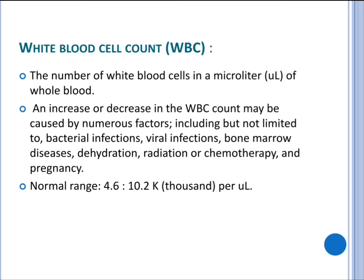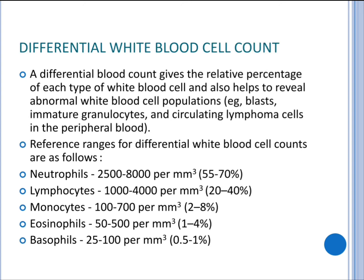A white blood cell differential, which enumerates the different types of white blood cells, may also be performed. The white blood cell count is the number of white blood cells in a microliter of whole blood. An increase or decrease may be caused by numerous factors including bacterial infections, viral infections, bone marrow diseases, dehydration, radiation or chemotherapy, and pregnancy. The normal range of white blood cells, commonly called leukocytes, is 4.6 to 10.2 thousand per microliter.